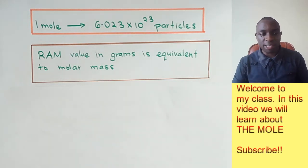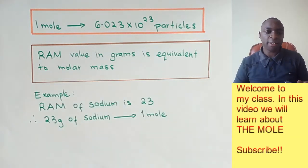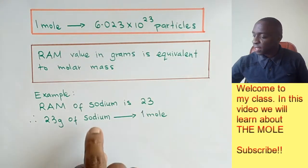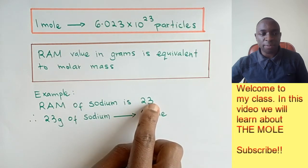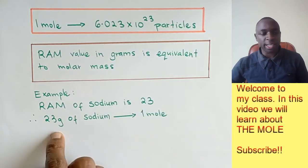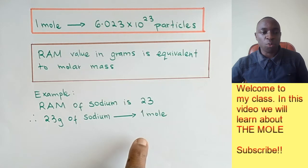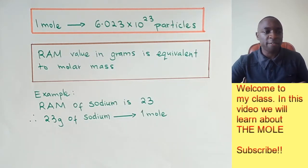What this means is, for example, if you had sodium - the relative atomic mass of sodium is 23. That means if you measured 23 grams of sodium, you end up with one mole of sodium. So these three statements are very important,